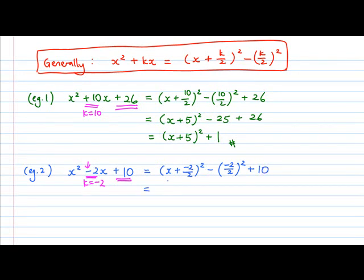Now we simplify this expression. Minus 2 divided by 2 is negative 1. Negative 2 divided by 2 is negative 1. Negative 1, whole thing square become positive 1. Hence my final expression after completing the square is this.